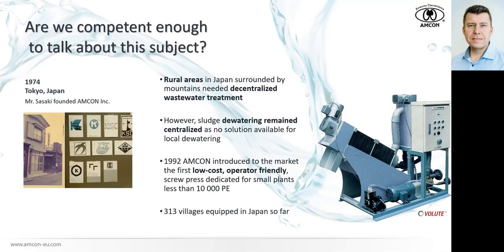It's very popular nowadays to say that something is in a company's DNA, and we can truly say that decentralized sludge dewatering is part of Amcon's DNA. Because without this approach, the company would have never developed the volute dewatering press. Decentralized sludge dewatering is really something very common for us in the company.